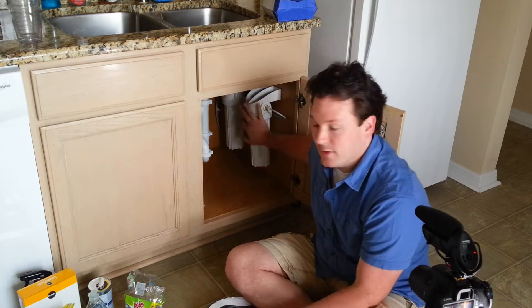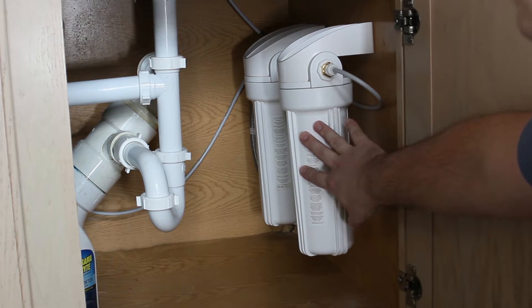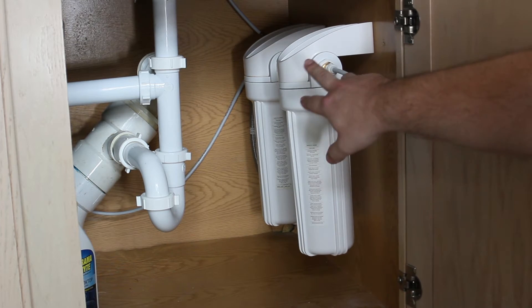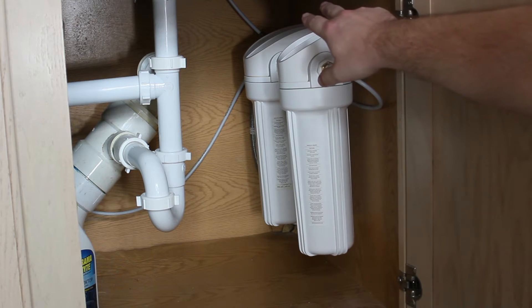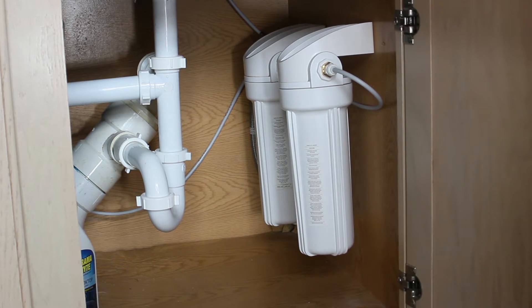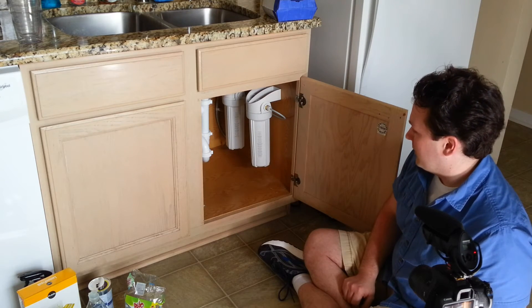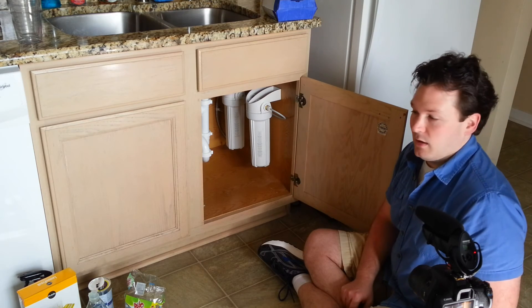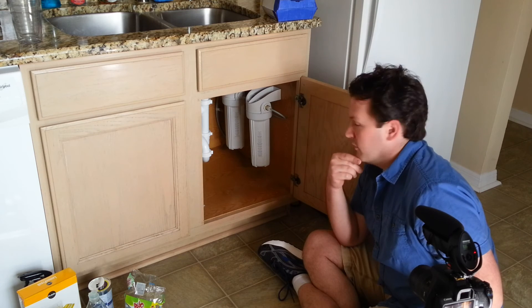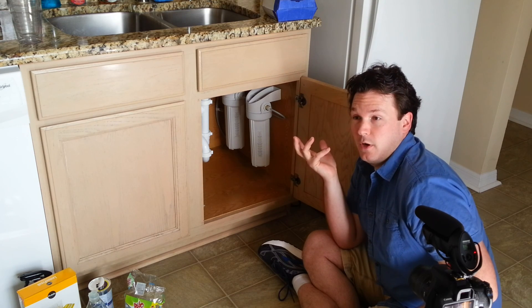Hopefully you can see this right here. There's two canisters - it goes into the front one here and then goes into the back one, and then it goes to the spigot and the ice maker. That's what we have for the time being. Soon we'll install the four-gallon tank and a reverse osmosis membrane that can produce a lot of water in a day.